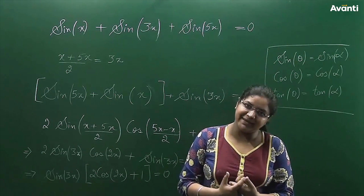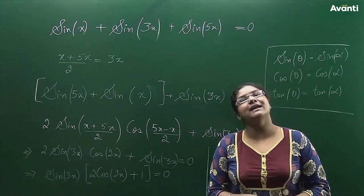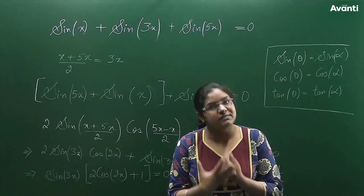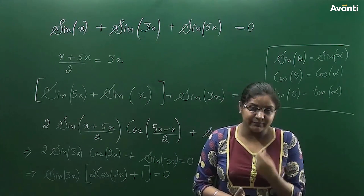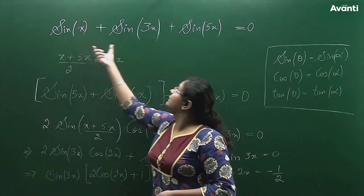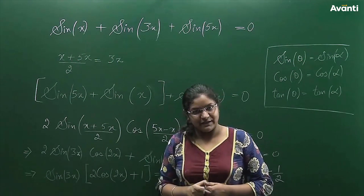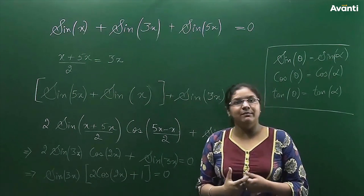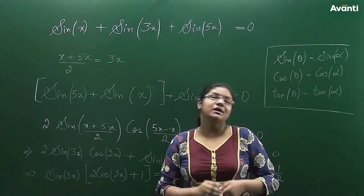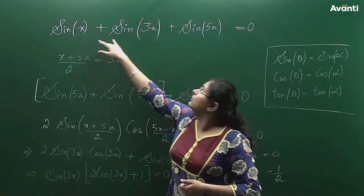Using observational skills, we combine sine x and sine 5x, because (x + 5x)/2 equals 3x, which means after applying the sum-to-product formula we will get a sine of 3x term. We already have a sine 3x term in the equation, so these can be factored together. Applying the formula sin c + sin d = 2 sin((c+d)/2) cos((c−d)/2), combining sine x and sine 5x gives 2 sin(3x) cos(2x).